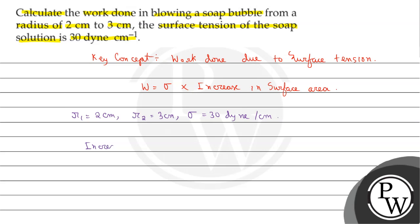The increase in surface area equals 2 multiplied by 4 pi multiplied by r2 square minus r1 square.